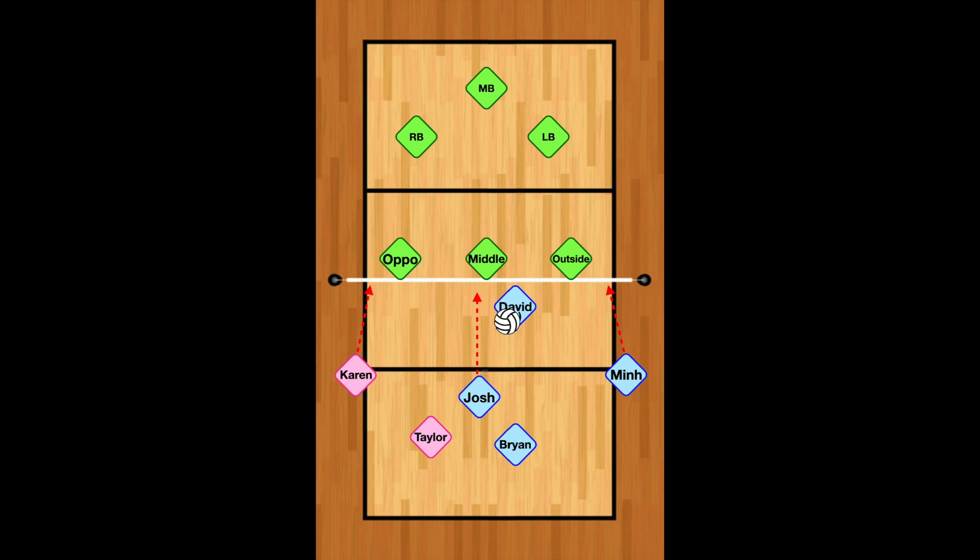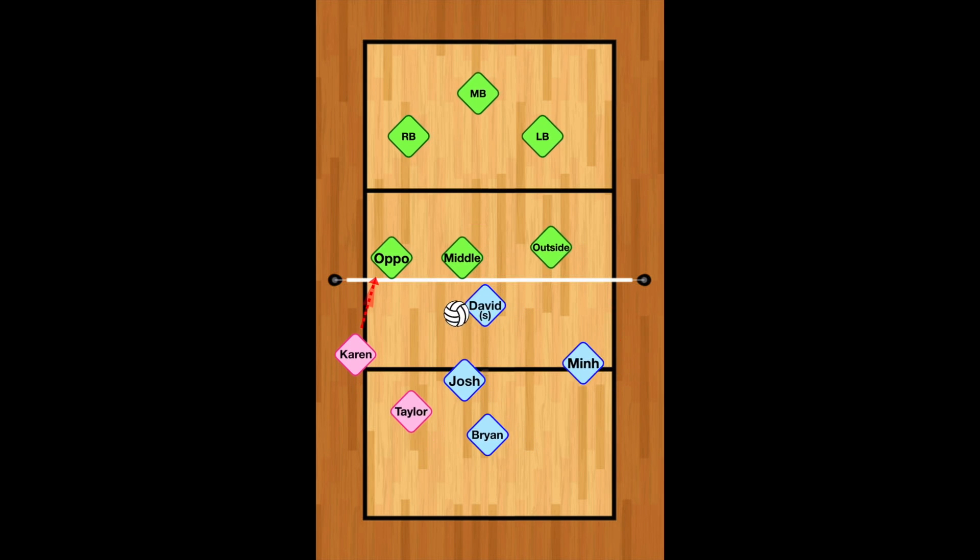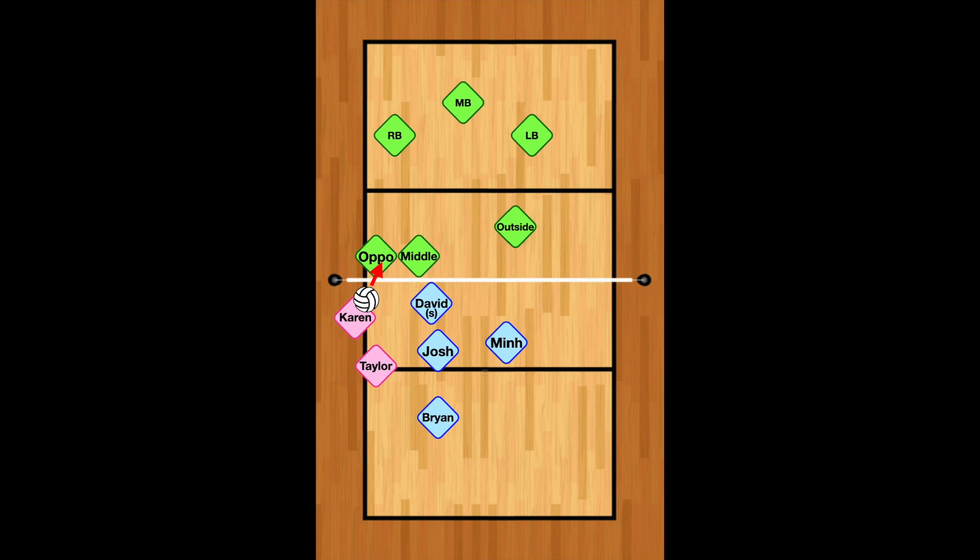Now David gets the ball. He has the option to set Karen, Josh, or Min. I'm going to have him set Karen first, and then the second setting I'm going to have him set Josh, and the third one I'm going to have him set me so you can see how this works. So now he's going to set Karen. Karen's going to go up to hit. Those blockers on the other side are blocking right there.